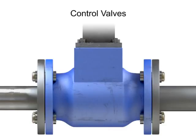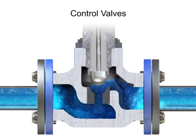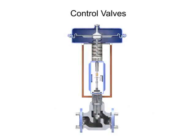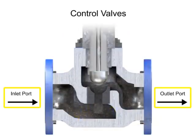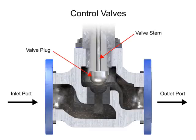Control valve actuators control fluid in a pipe by varying the orifice size through which the fluid flows. Control valves contain two major components: the valve body and the valve actuator. The valve body provides the fluid connections and a movable restrictor, comprised of a valve stem and plug that is in contact with the fluid that varies the flow. The valve actuator is the component that physically moves the restrictor to vary the fluid flow.